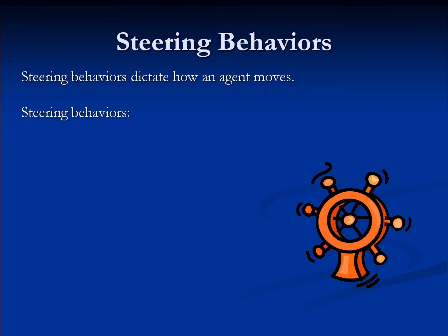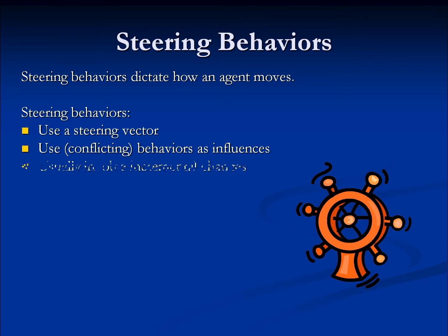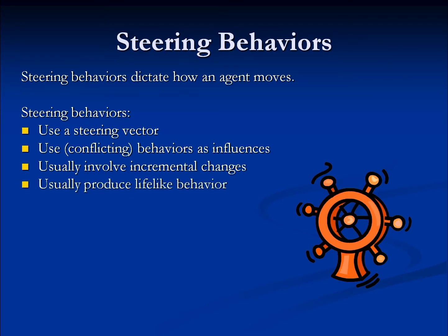Steering behaviors have a few key features. First of all, they all use some kind of forward vector to determine the direction and speed at which an agent moves. There are also one or more possibly conflicting behaviors that act as influences on that agent, pressing it in some direction. Steering behaviors are enacted through a series of small incremental changes over time that usually results in very lifelike behavior due to the smooth change in motion.